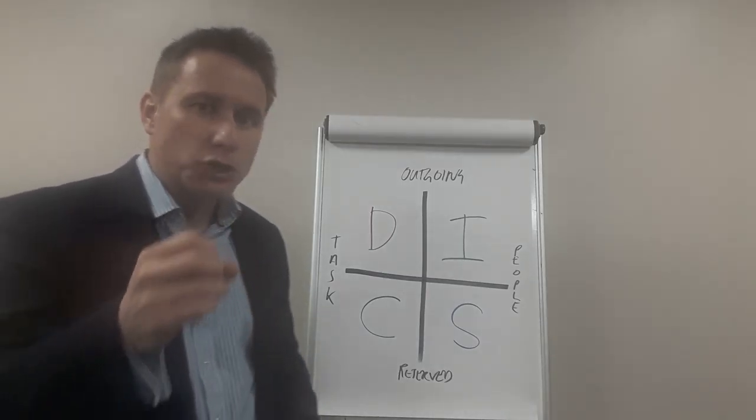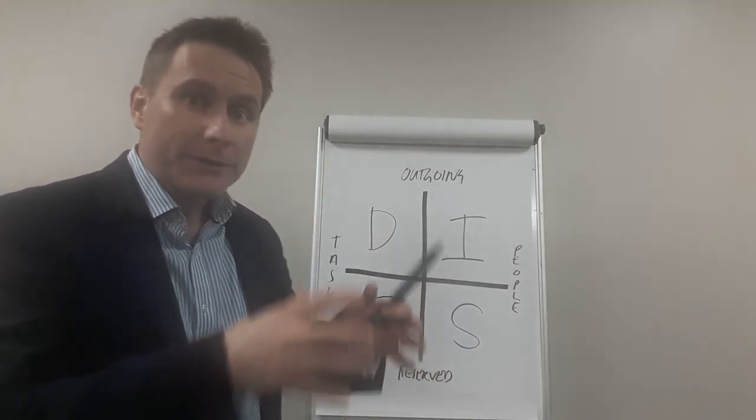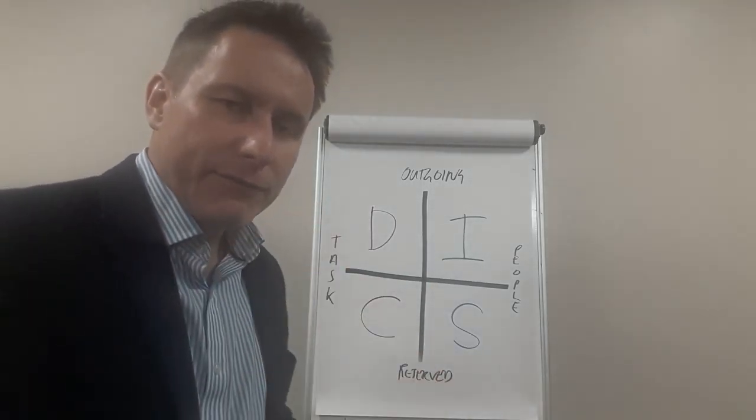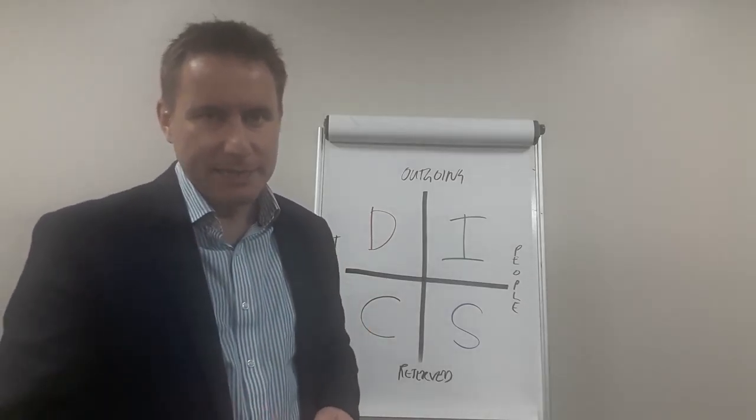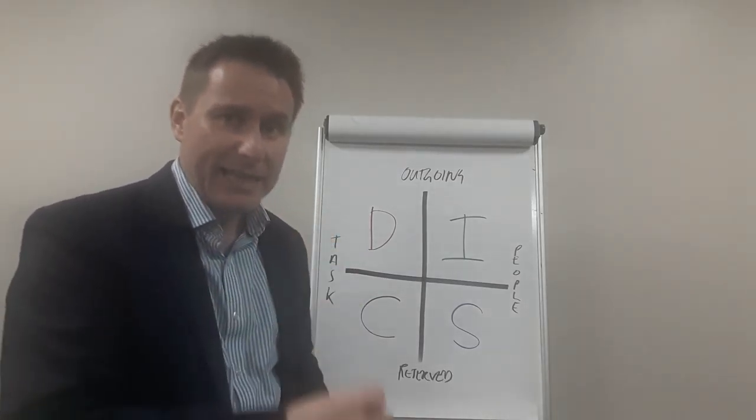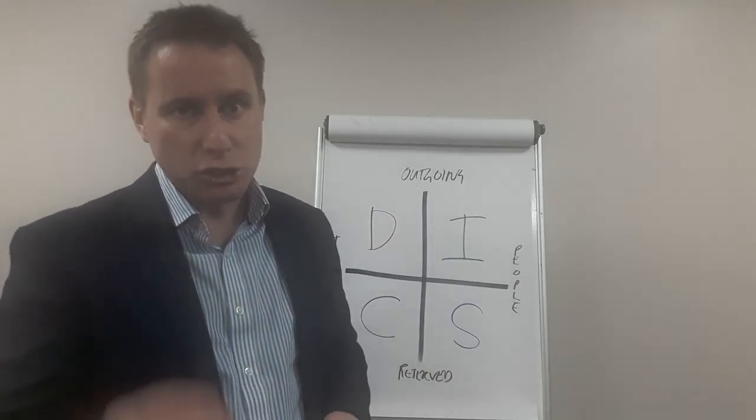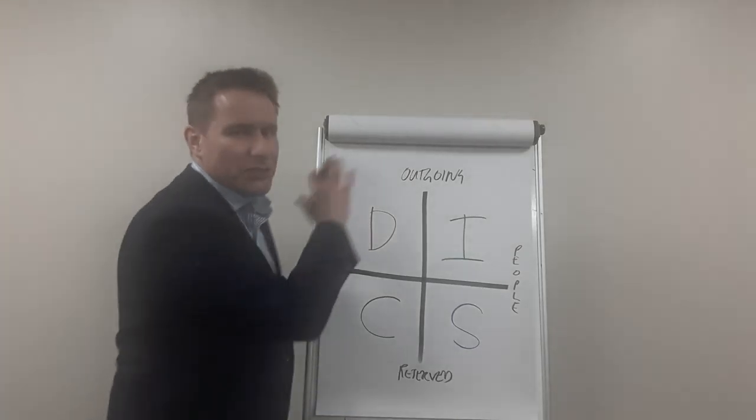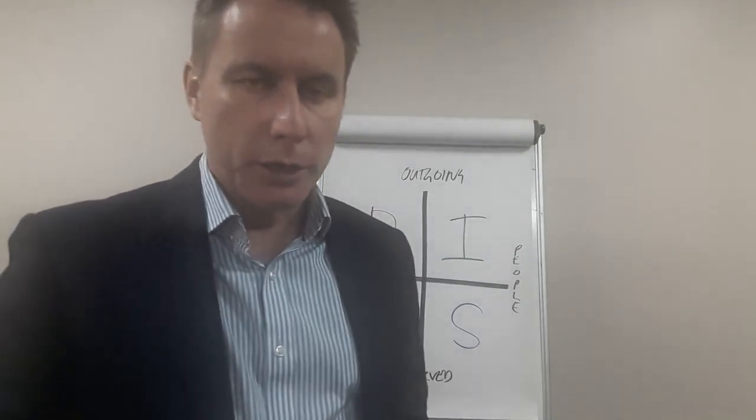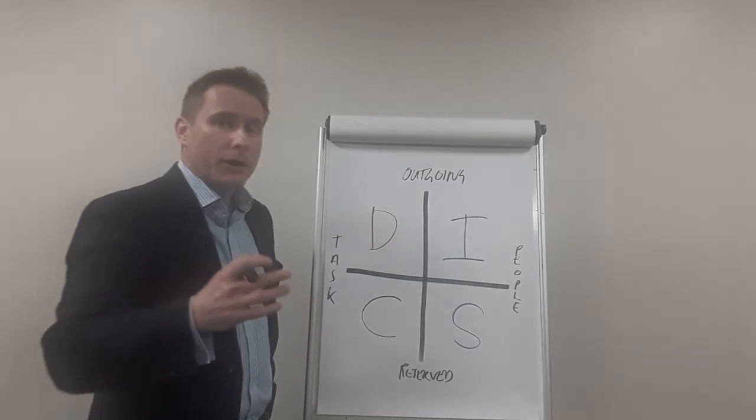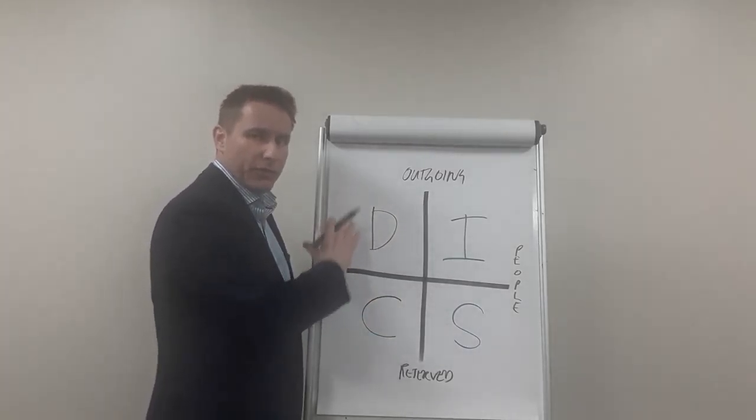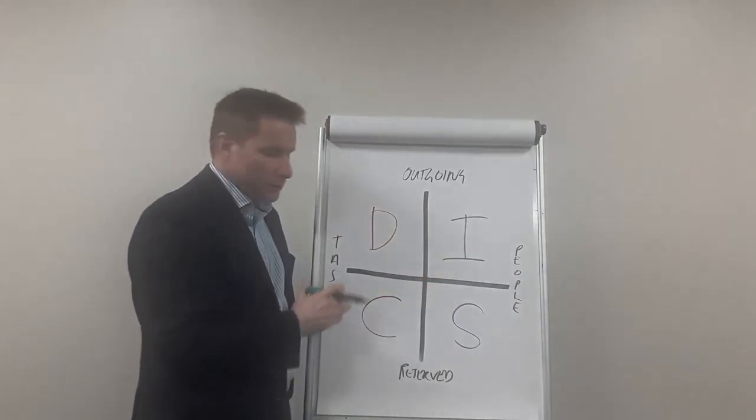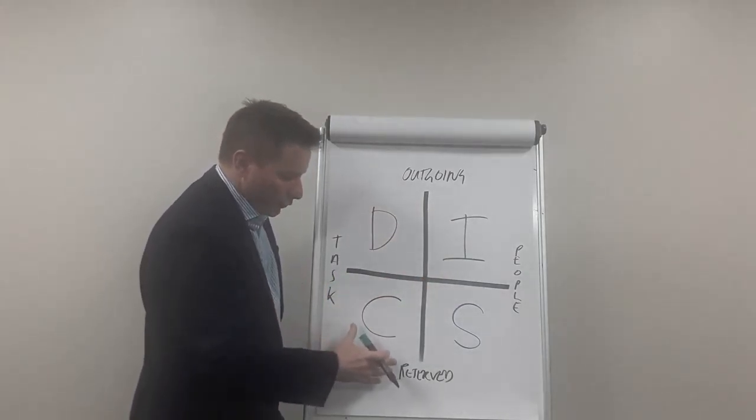And then finally, we've got the conscientious behavioral style who are really into the detail. They want things to be precise, very perfect. If you want a job done well, give it to a C-type behavioral style. But if you're going to give it to them, don't expect it to be done fast. One of their downsides is they tend to do things at a much slower pace because they want that perfection. So that's just a really quick whistle-stop tour of the different styles.